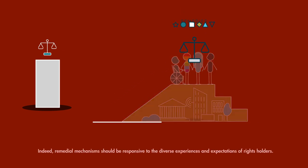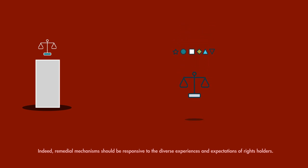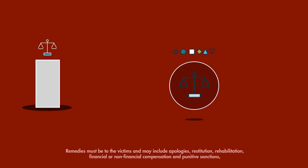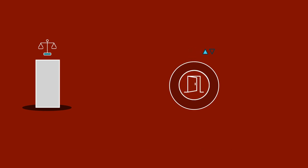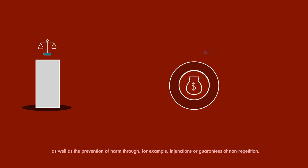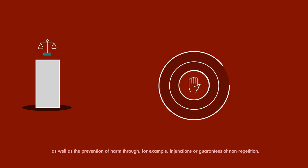Remedial mechanisms should be responsive to the diverse experiences and expectations of rights holders. Remedies must benefit the victims and may include apologies, restitution, rehabilitation, financial or non-financial compensation, and punitive sanctions, as well as the prevention of harm through, for example, injunctions or guarantees of non-repetition.